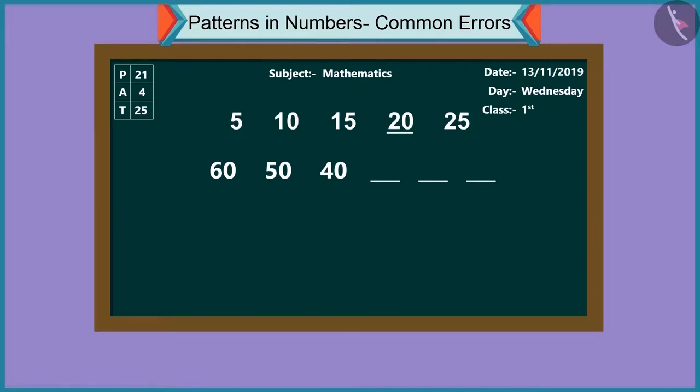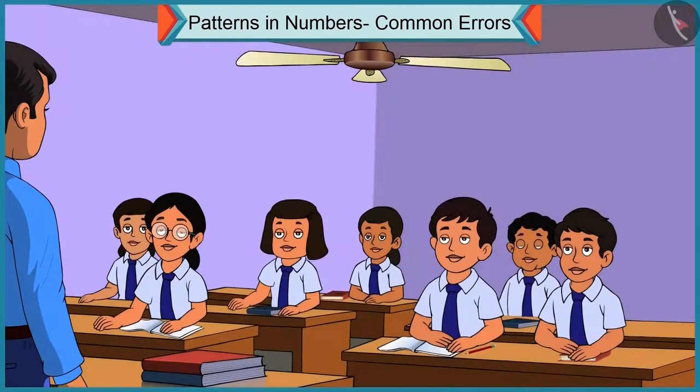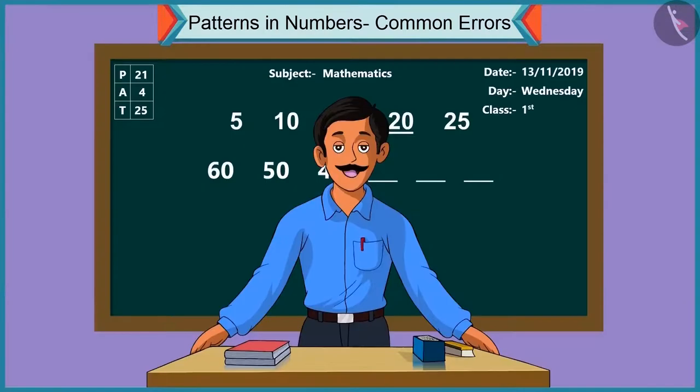To continue this pattern, after forty comes forty-one, forty-two, forty-three. Oh, no! Look at this pattern carefully. As the pattern continues, the numbers are decreasing. Yes, here after sixty, fifty, and after fifty, it's forty written here. Sir, what is the pattern here?